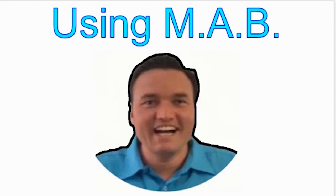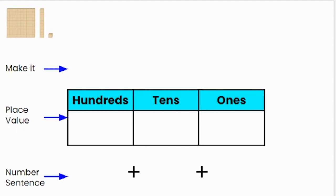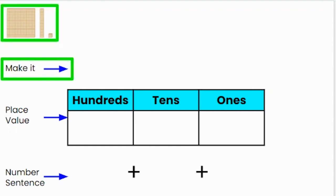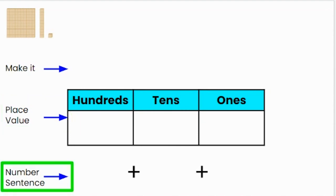Using MAB with Mr Lowes. In this video I will be using MAB to expand three-digit numbers. The first way that I will be expanding three-digit numbers is by making the number using the MAB. After I've made the number I will write the number in the place value chart, and finally I will write a number sentence.